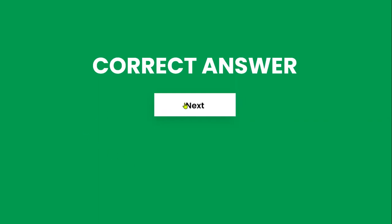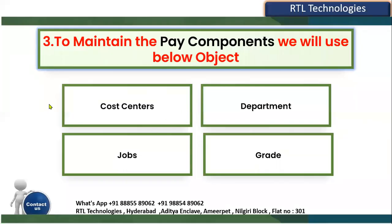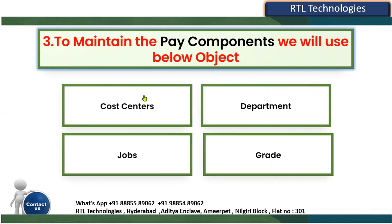Now entering the third question: to maintain pay components, which object do we use? First, let's understand what pay components are. Pay components are things like salary, bonus, variable allowance, and project allowance. These are all pay components. In the payroll module we define elements, but that is a different concept.